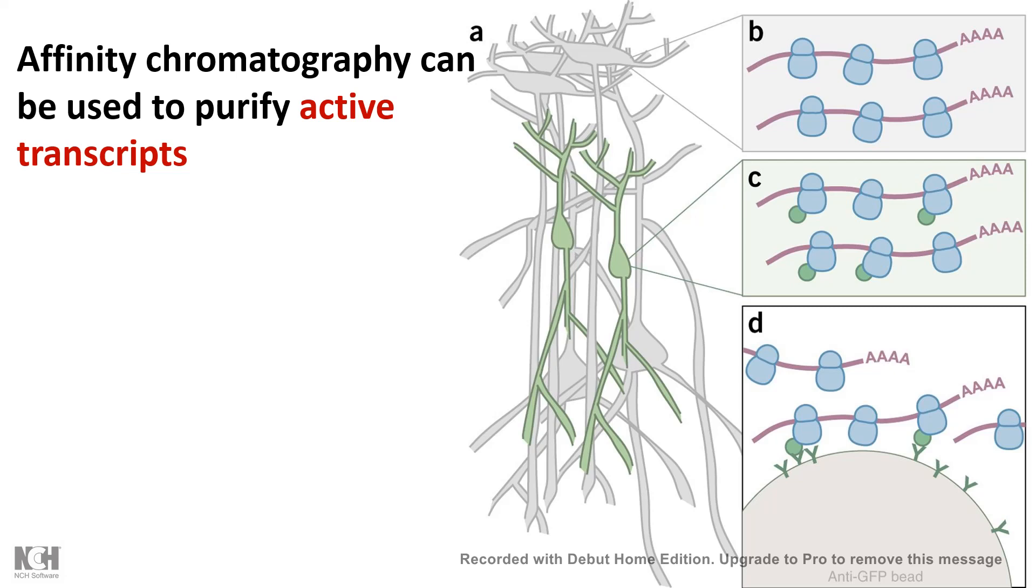So with a genetic method you put a tag in the ribosome. Let's say the tag is GFP and followed by an anti-GFP bead you can pull down the whole complex of bead, ribosome and the mRNA along with it.